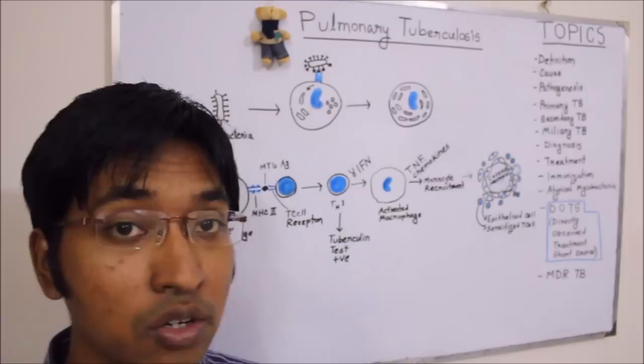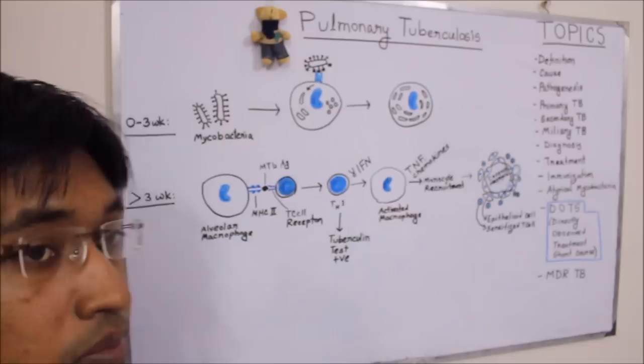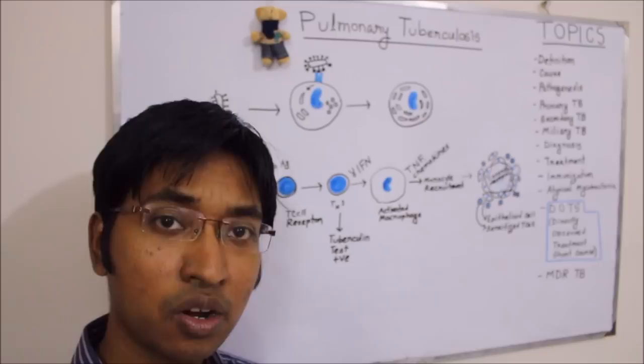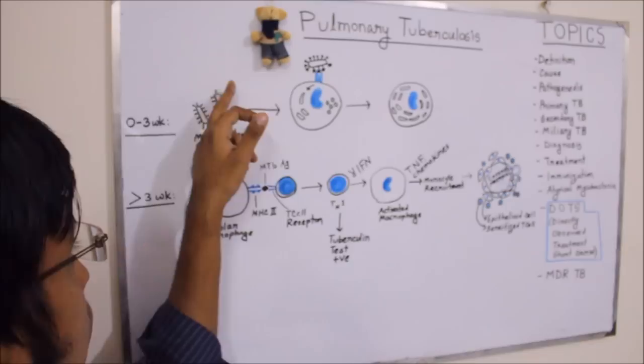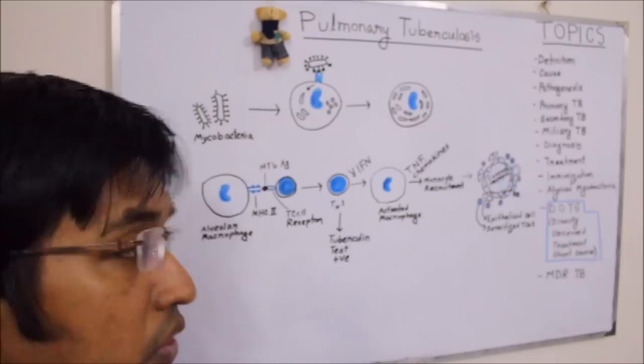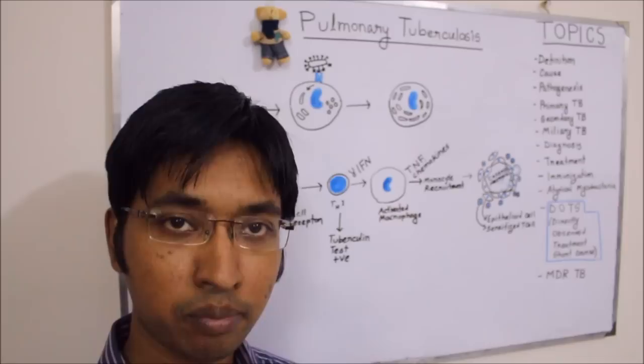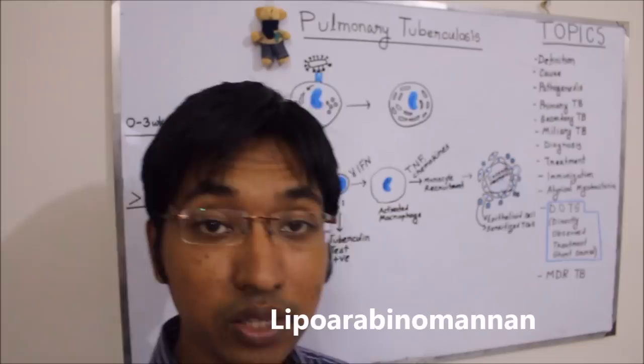On the far left of the board you can see the organisms. Recall that mycobacterium tuberculosis is a slender rod-shaped organism. On the surface of mycobacteria there are a lot of glycolipids — one of them is known as lipoarabinomannan, and there are other molecules on the surface as well.